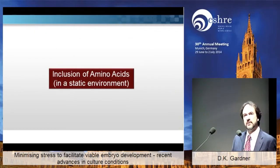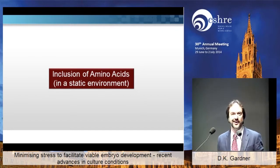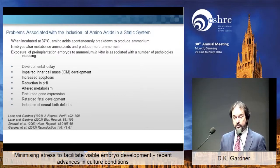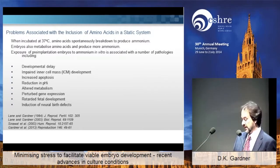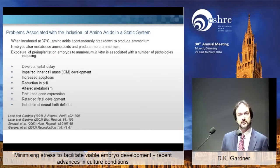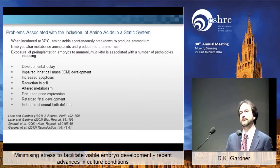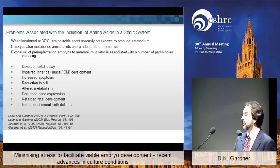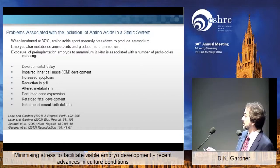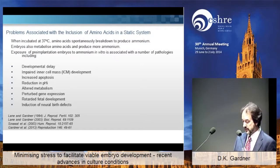We have documented, and many labs have documented, that amino acids are highly beneficial in an embryo culture environment. But one of the problems is that we're working in vitro, and amino acids are labile — they spontaneously break down to release ammonium. Furthermore, to add insult to injury, the embryo itself can produce ammonium through the transamination of amino acids. These studies have documented some adverse effects of ammonium on embryo development.